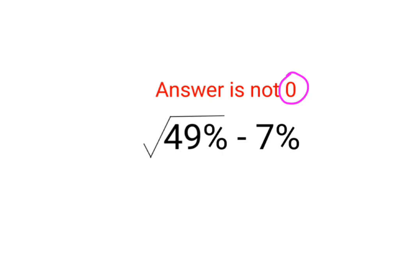The question is root of 49% minus 7%. Now please understand, 49% can be written as a fraction of 49 upon 100.